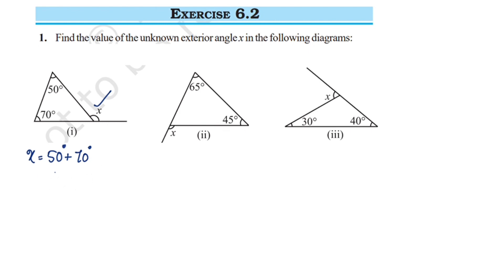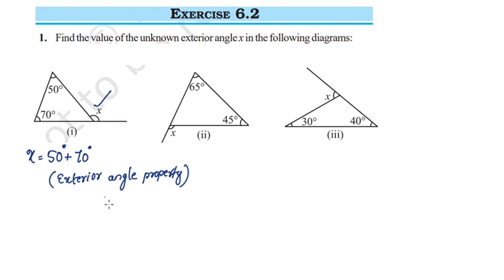The exterior angle property states that the exterior angle of a triangle is equal to the sum of its two interior opposite angles. So x is equal to 50 plus 70, which is 120 degrees.